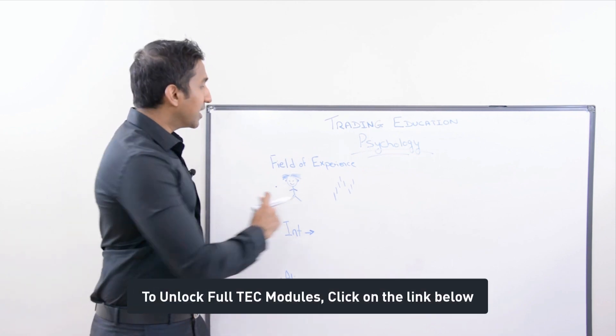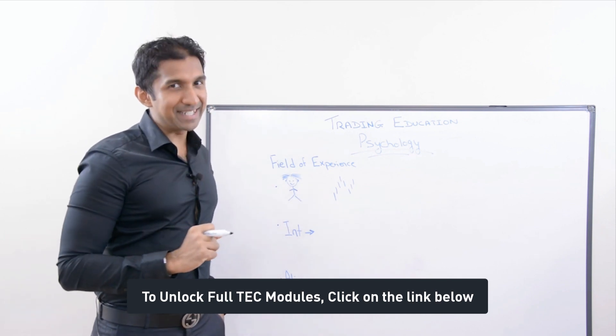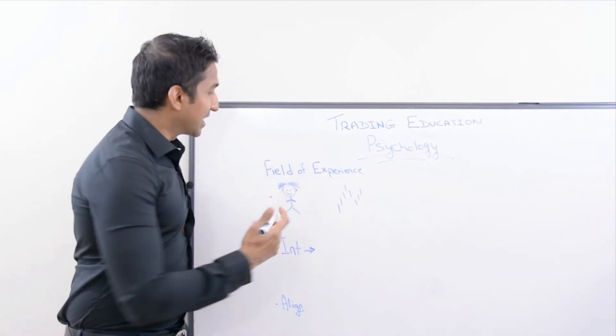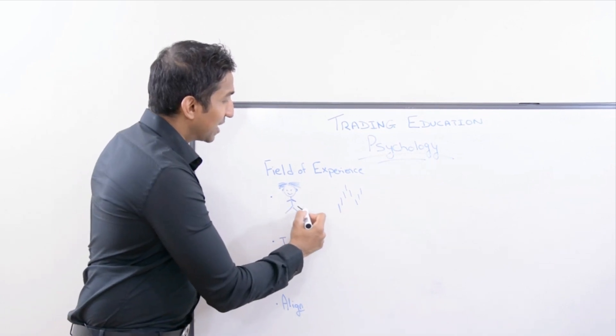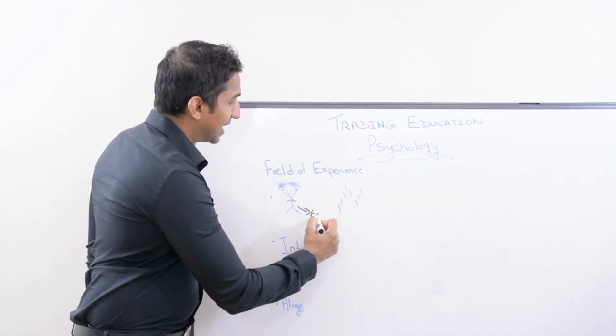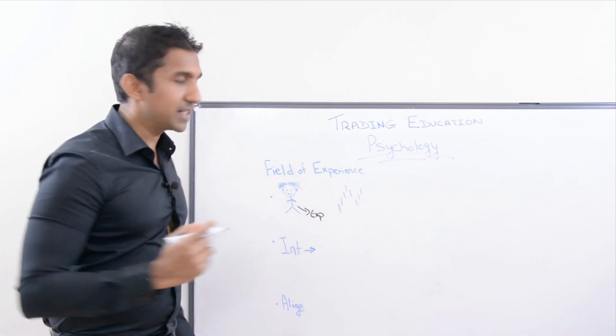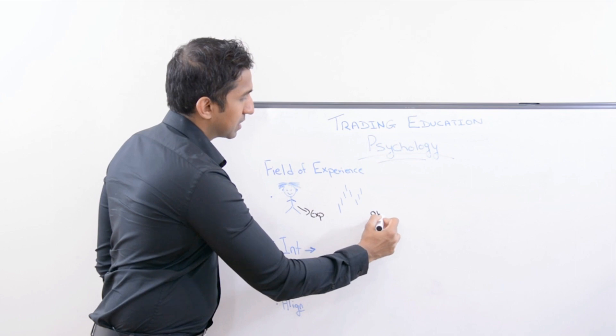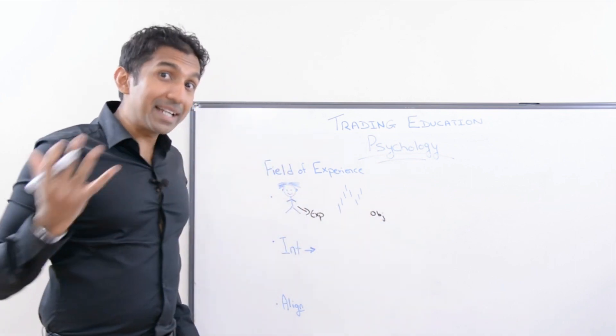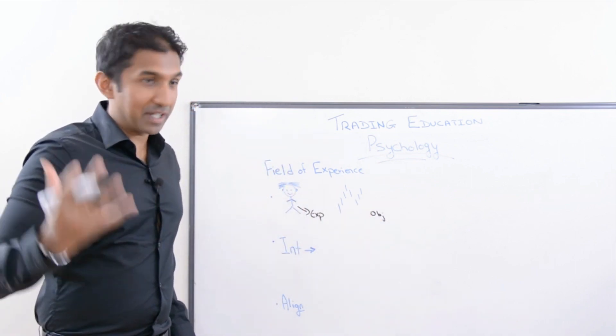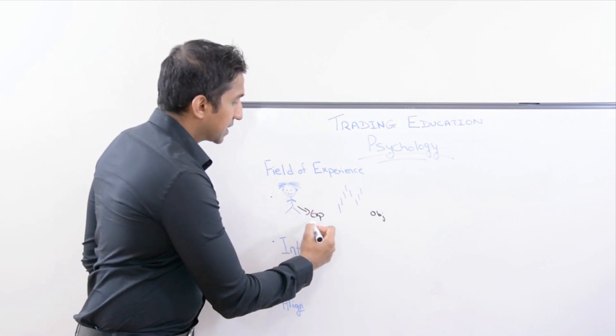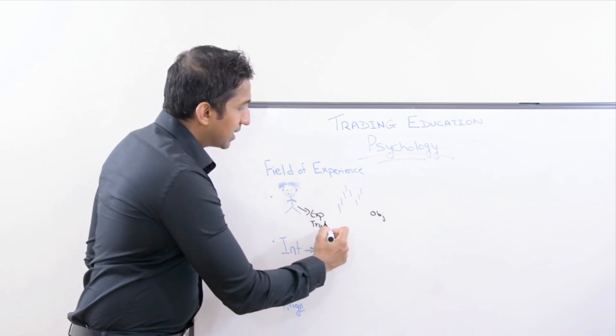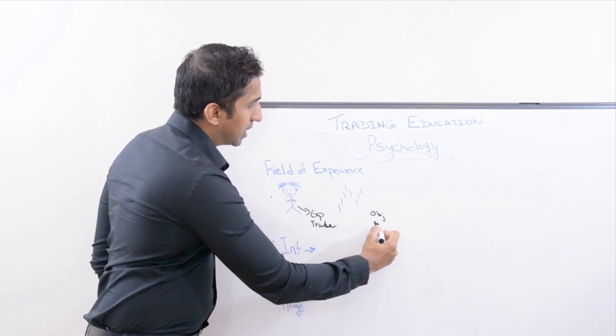The first element, I've done my best drawing, you can see that the first element that you need is the experiencer. And the second thing that you need is the object. In our trading example, in everyday trading, the experiencer is of course you, the trader, and the object will be the market.